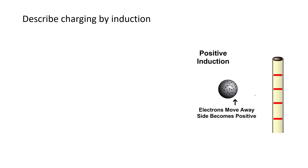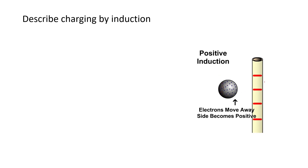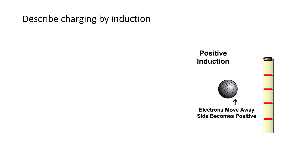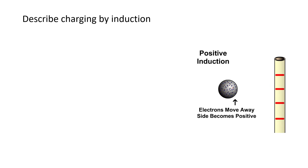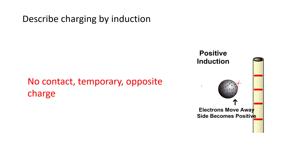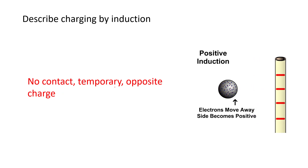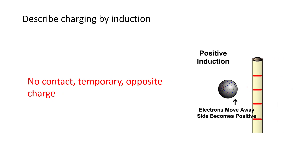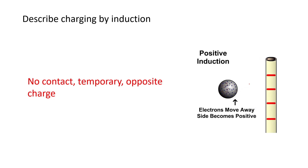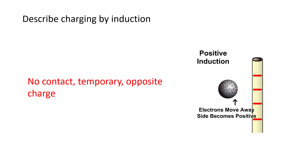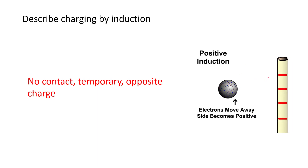Describe charging by induction: a charged object gets close to another object without contact. Electrons are repelled from a negative charge, leaving a positive charge closest to that negative. It's temporary because as soon as you move the PVC pipe away, those electrons come back and neutralize. The charge induced is always the opposite — the charge left nearest the negatively charged PVC pipe is positive.